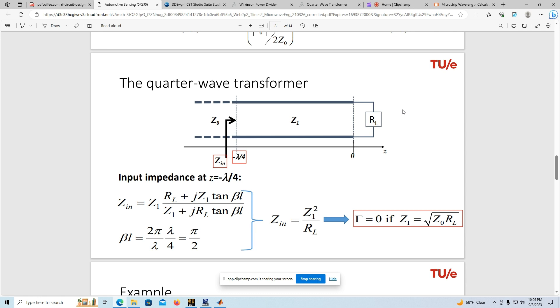The idea is, if you have a transmission line of characteristic impedance Z naught and a load RL, if you insert a quarter-wave length transmission line with characteristic impedance Z1, and if Z1 is the square root of Z naught RL, you have a match, and Zin is then equal to Z naught.